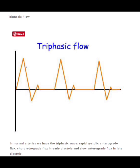This rapid deceleration slope will go below the baseline and represents temporary reversible — or retrograde — flow during late systole to early diastole. Then the waveform will come back up past the baseline and touch the baseline one more time, thus ending the triphasic flow. Triphasic waveforms will have three distinct points.